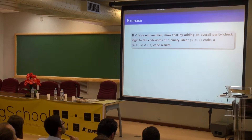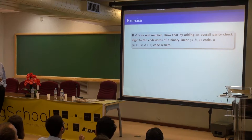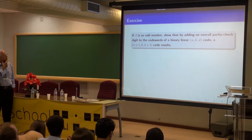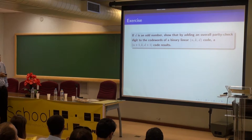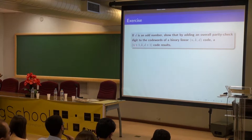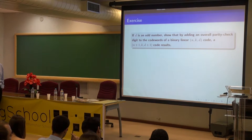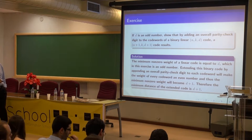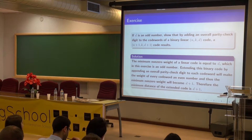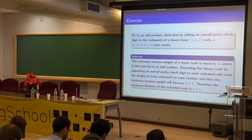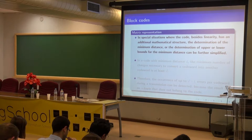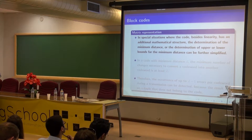A well-known result: if you have a binary code with an odd minimum distance, and you add an overall parity check, you produce a code that has the same number of information digits, the block length increases by one, but importantly the minimum distance increases by one. Since the minimum distance is the minimum weight non-zero code word, and if that weight is odd, adding an overall parity check makes it even, increasing the minimum distance by one.